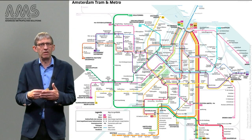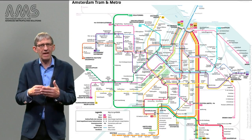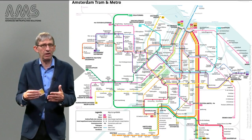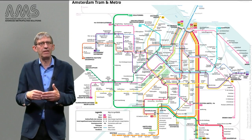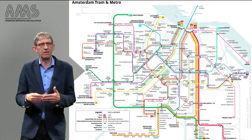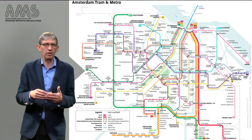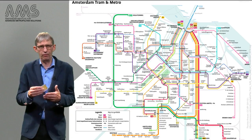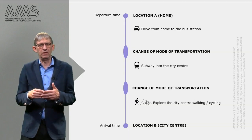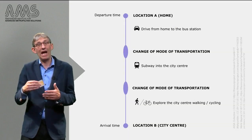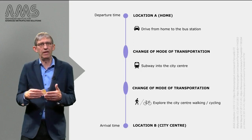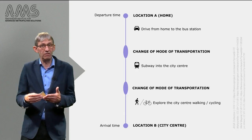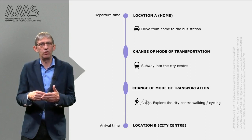An urban mobility system typically consists of networked infrastructures, which include particular hubs, transferia or stations that have been designed in such a way that the transfer from one transport modality to another can proceed in a smooth, efficient way. For example, when you visit a city, you may have to park your car outside the center, take the underground to bring you into the city center, and then use your feet or a bike to explore the tourist highlights.